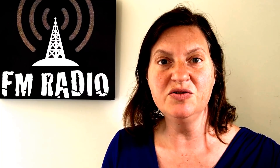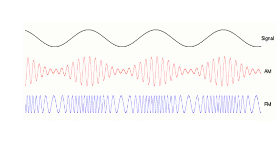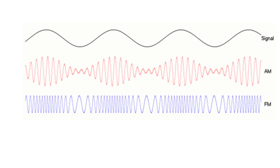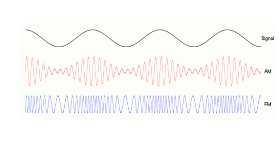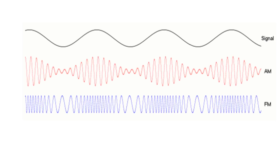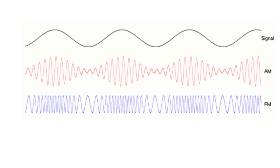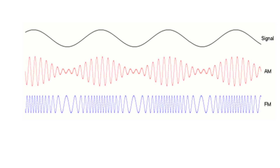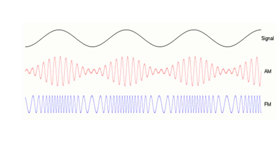Sarnoff had repeatedly said that he wished he had a little black box to get rid of static, and Howard Armstrong thought he had the solution. Why not create a radio wave where the amount the frequency deviated from the original — more squished or stretched — corresponded to the sound wave produced in the microphone, instead of changing the height? For this reason, it is called FM radio, for frequency modulation.